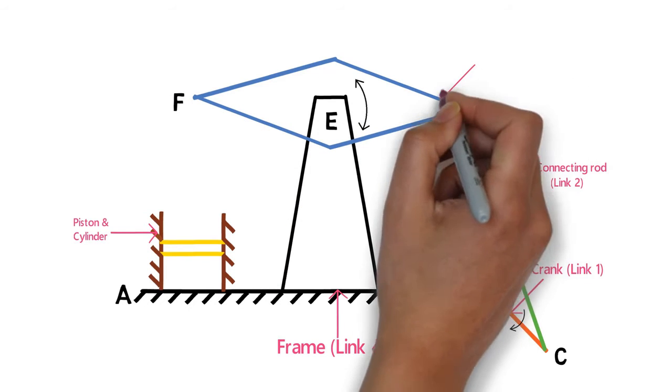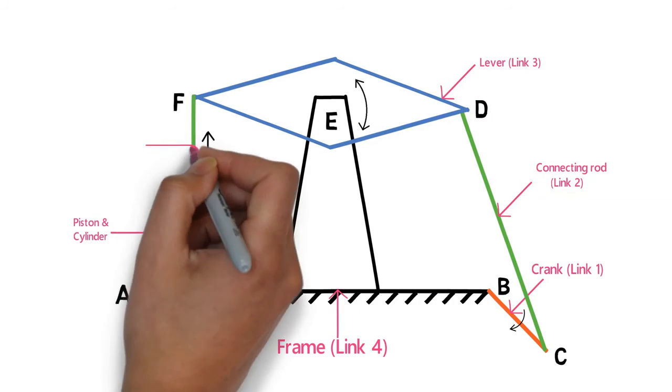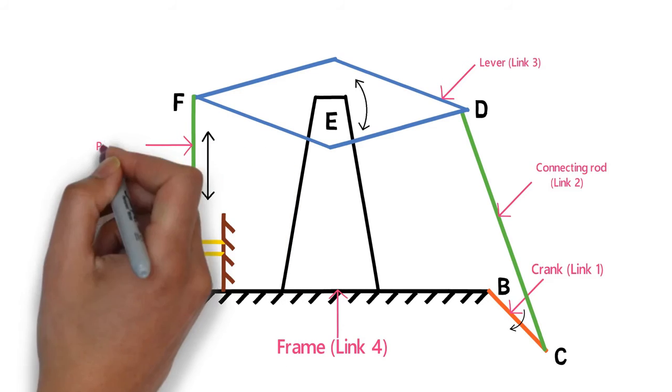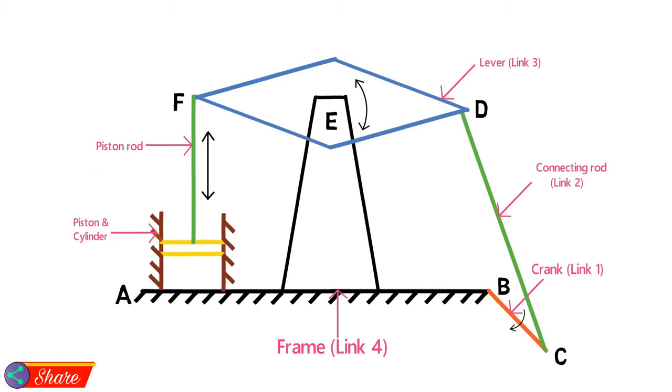So due to rotation of crank, the lever will oscillate about point E. And this oscillatory motion of lever is transferred into reciprocating motion of piston inside the cylinder. So this mechanism is used to convert rotary motion into reciprocating motion.